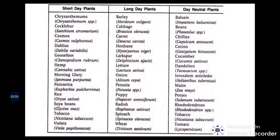Next, based on photoperiodic response: short day plants are related to Kharif crops — they require very little daytime. Examples are chrysanthemum, cosmos, dahlias, goosefoot, hemp, morning glory, rice, and tobacco. Long day plants correspond to Rabi crops — examples are barley, cabbage, wheat, carrot, lettuce, onion, petunia, opium poppy, radish, and spinach. Day neutral crops can be grown throughout the year; the photoperiod — whether long or short day — does not matter.